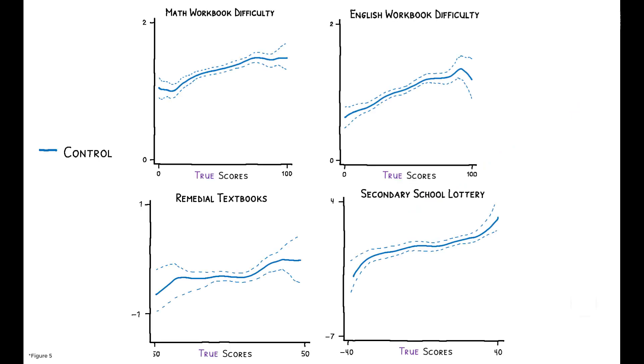Correspondingly, when we look at the correlation between investment decisions and true test scores, we see that treatment parents' investment decisions are three to six times more strongly aligned with their children's actual performance. In other words, improving the accuracy of beliefs reduces investment mistakes.